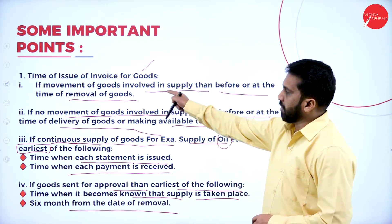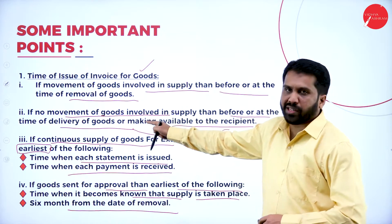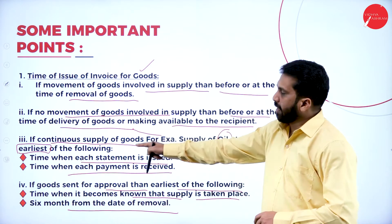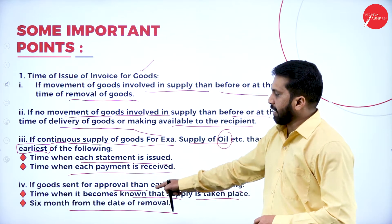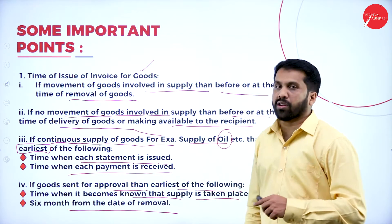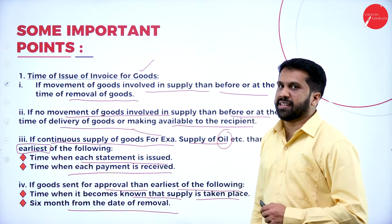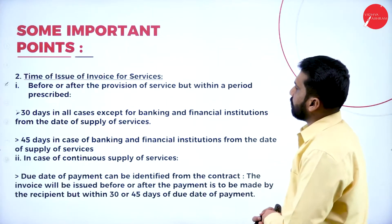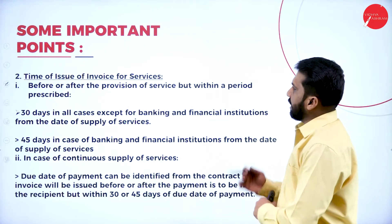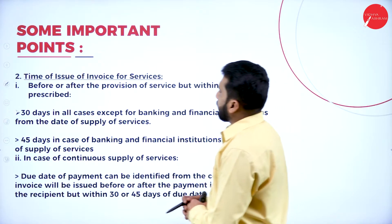So to summarize the four scenarios for goods: normal supply with movement, supply without movement, continuous supply, and supply on approval basis.